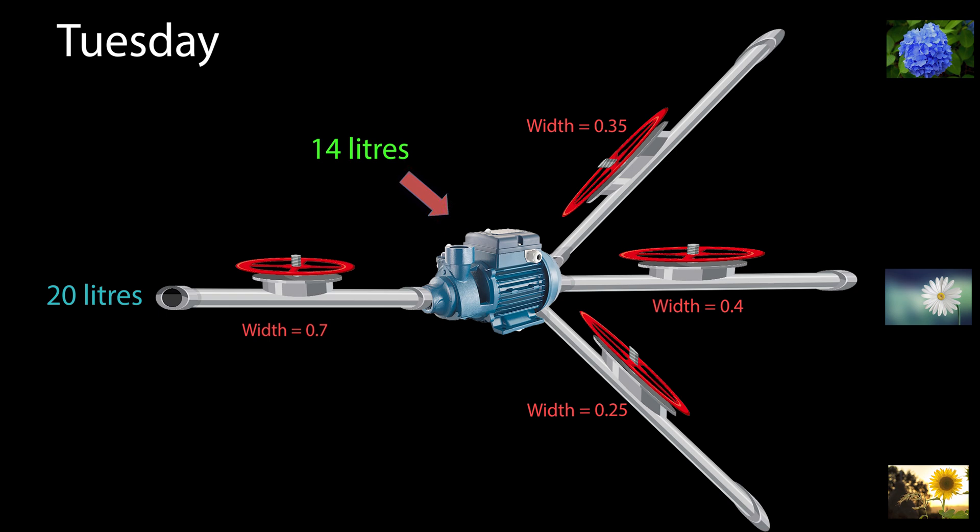However, this is enough to allow the gizmo to let the water through. Only 35% of the 14 litres gets passed onto the hydrangeas, which is 4.9 litres. Only 40% gets passed to the daisies, which is 5.6 litres. And only 25% gets passed to the sunflowers, which is 3.5 litres. This isn't the required amount of water for each flower type on each day, and hence this hypothesis isn't completely accurate.